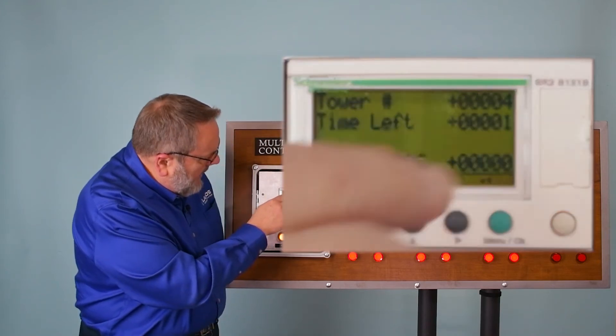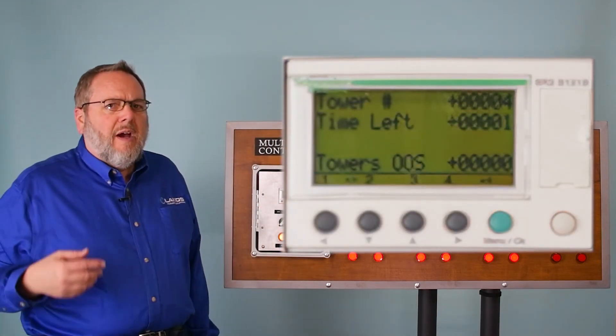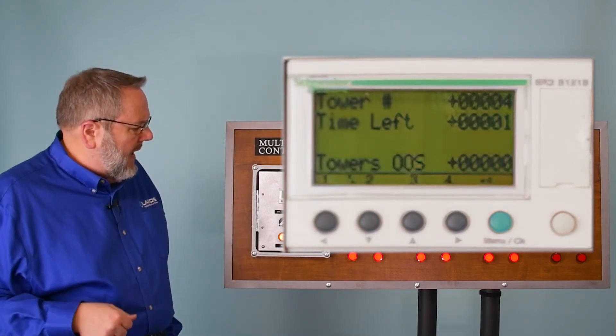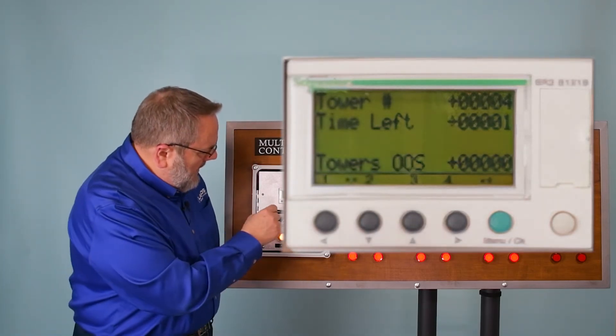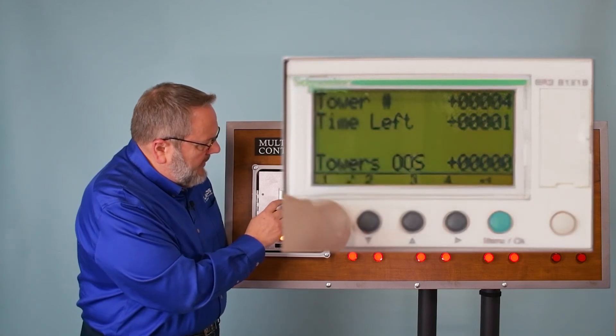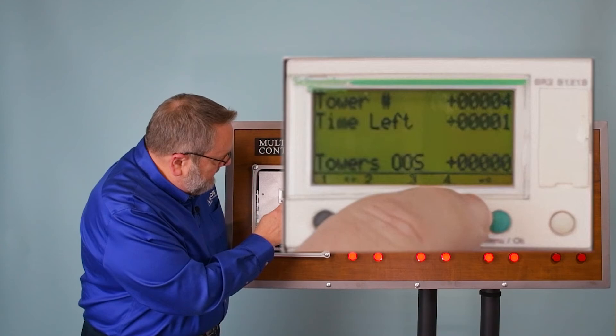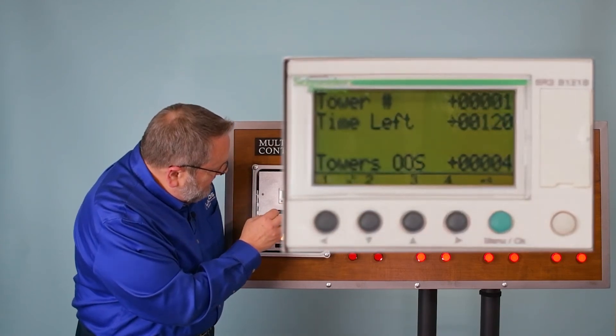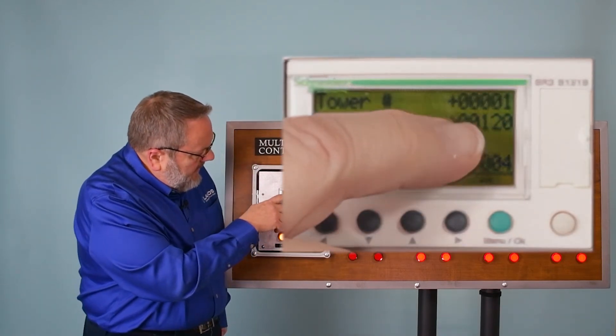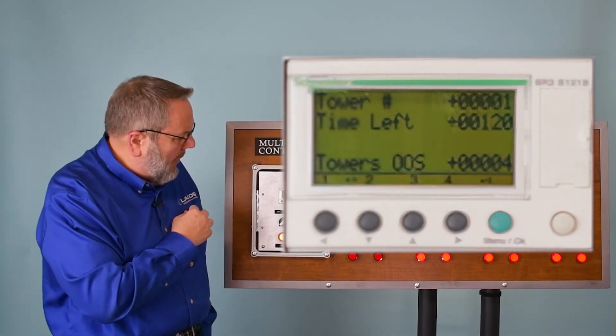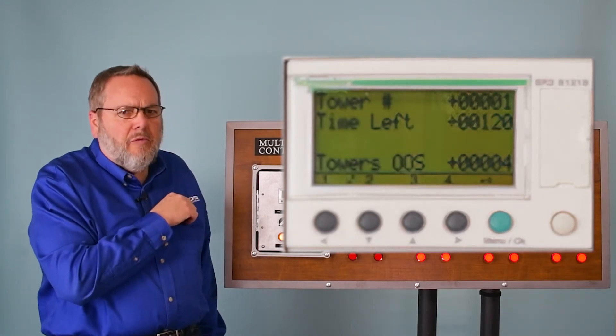And it should tell you when you get on here that you have on tower one that you have 120 minutes to run, and then that will start to count down. So if I go push this here, I'm going to bypass tower four. So you can see here now, it says on the display 120 minutes for tower one. So that's what it will run before it switches over.